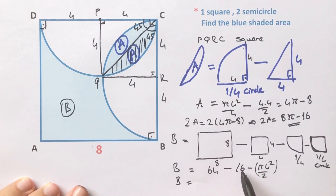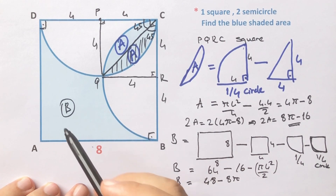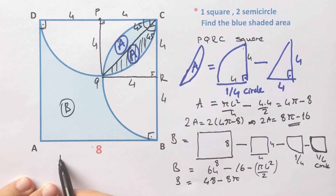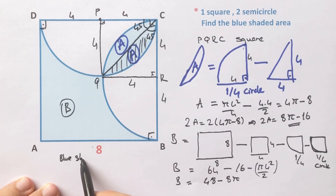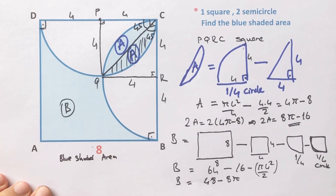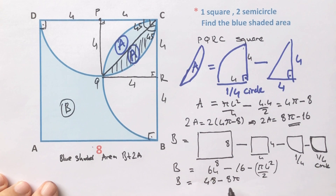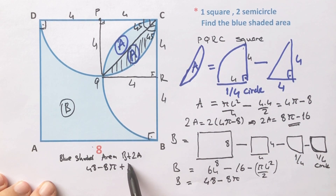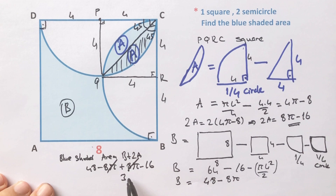So B equals 48 minus π×4² over 2, which equals 48 minus 8π. The total blue shaded area equals B plus 2A: B is 48 minus 8π, and 2A is 8π minus 16. Therefore the blue shaded area equals 32 unit square. That was the first method.